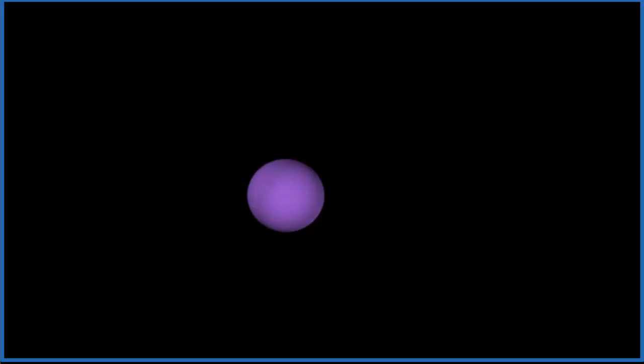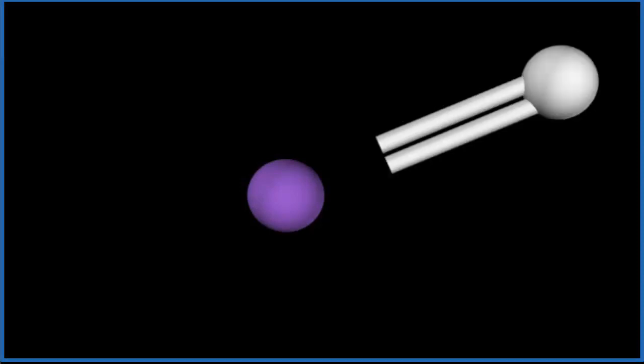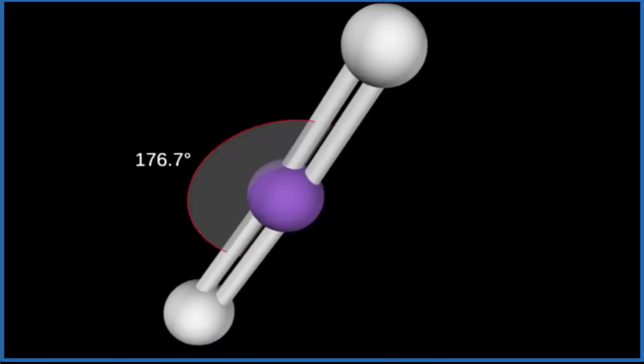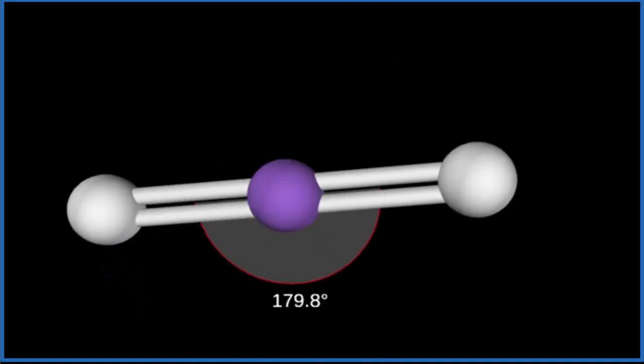So let's look at this in three dimensions. Remember we had that central atom, that's the purple, say that's the sulfur. Add the two oxygens, one, two, and they spread out. They're as far away from each other as they can be.